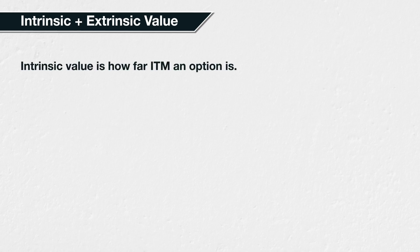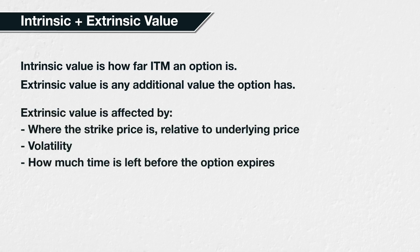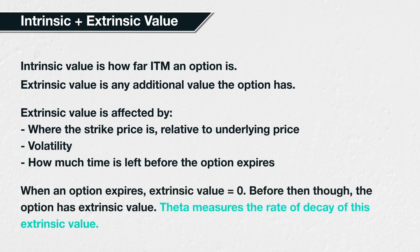In lecture 7.4 we covered intrinsic and extrinsic value. Intrinsic value is how far in the money the option is, and this calculation is the same regardless of how much time remains until the option expires. Extrinsic value is equal to the option price minus the intrinsic value of the option, so it is any value the option has on top of its intrinsic value. At the moment an option expires, the extrinsic value will have reduced to zero, leaving only the intrinsic value remaining, if any.